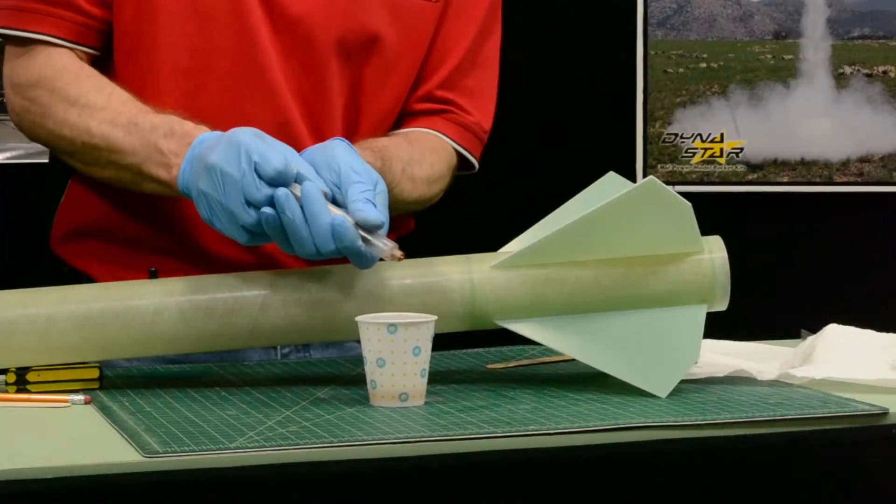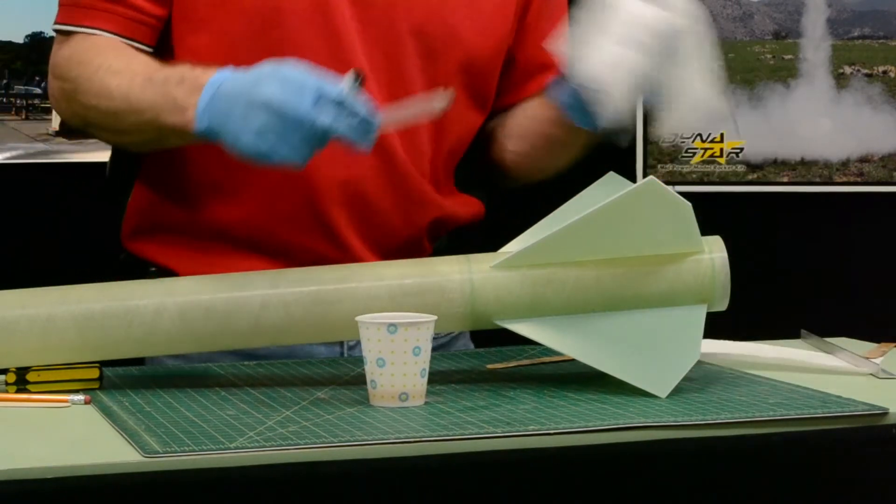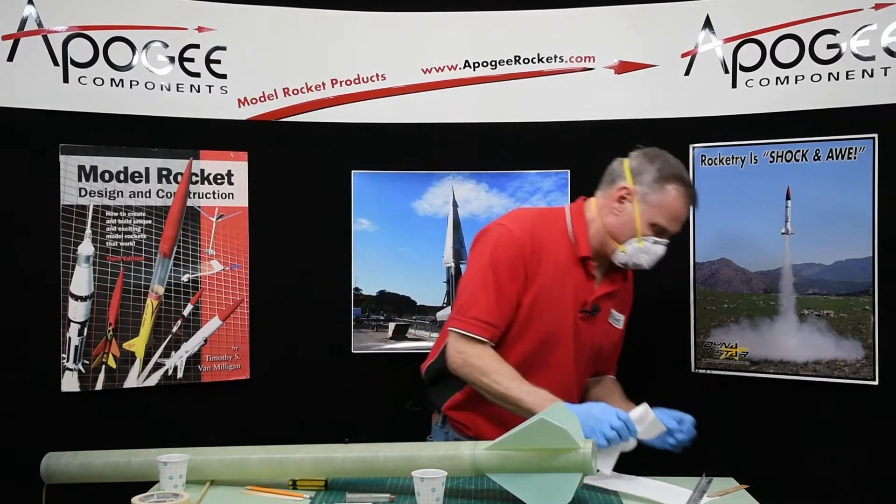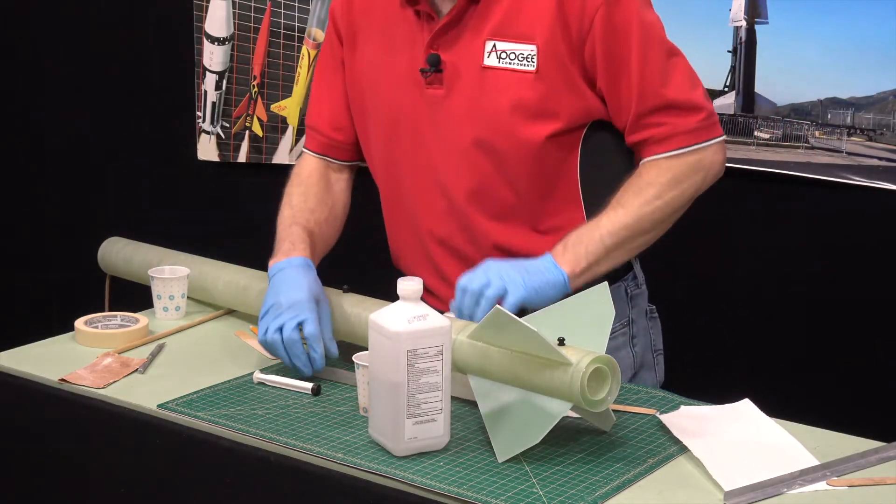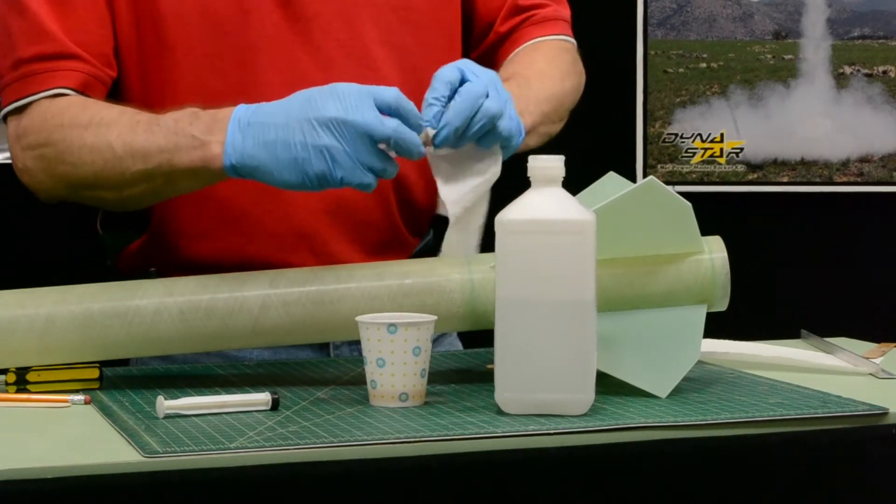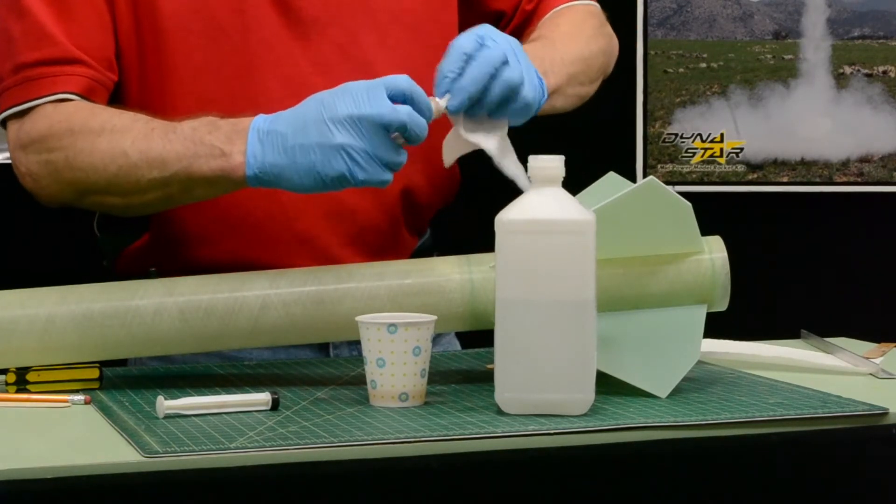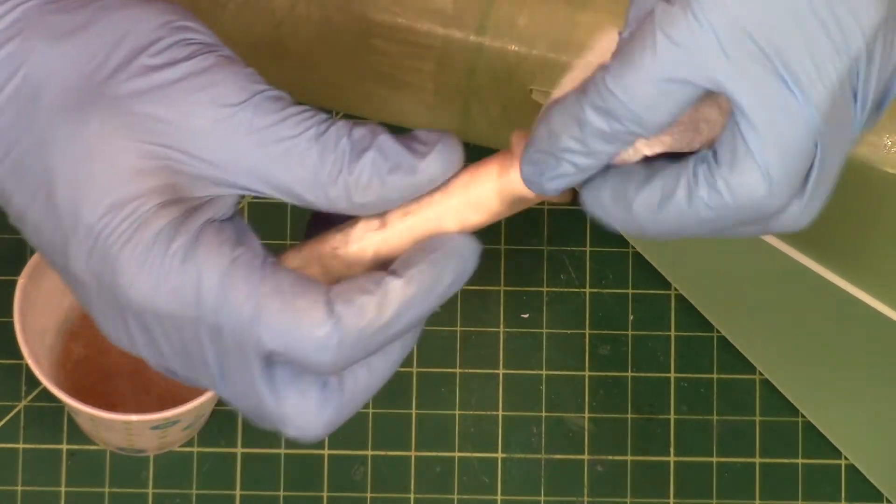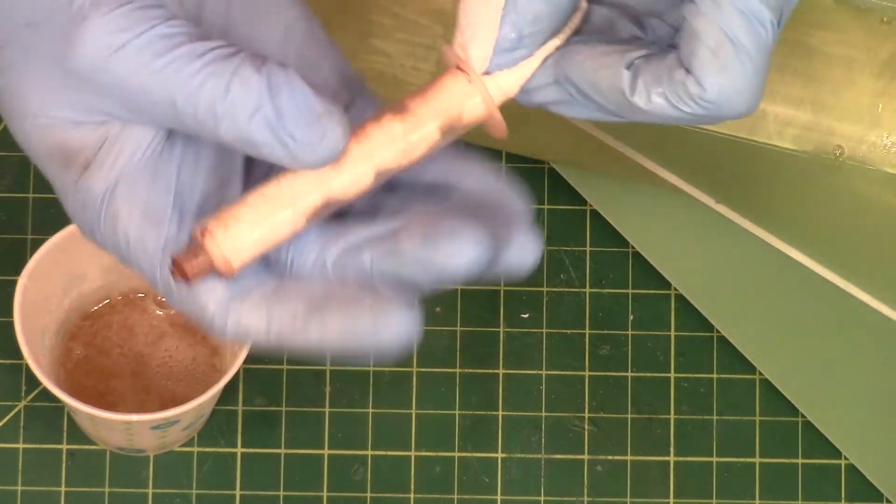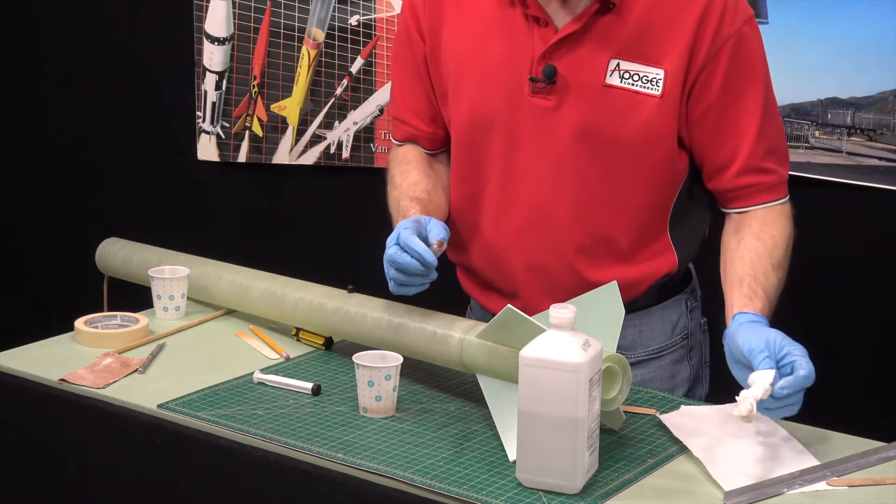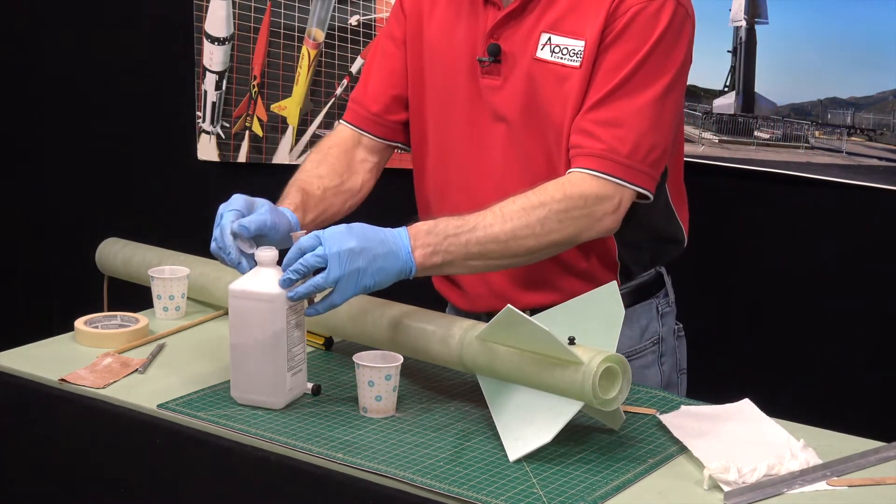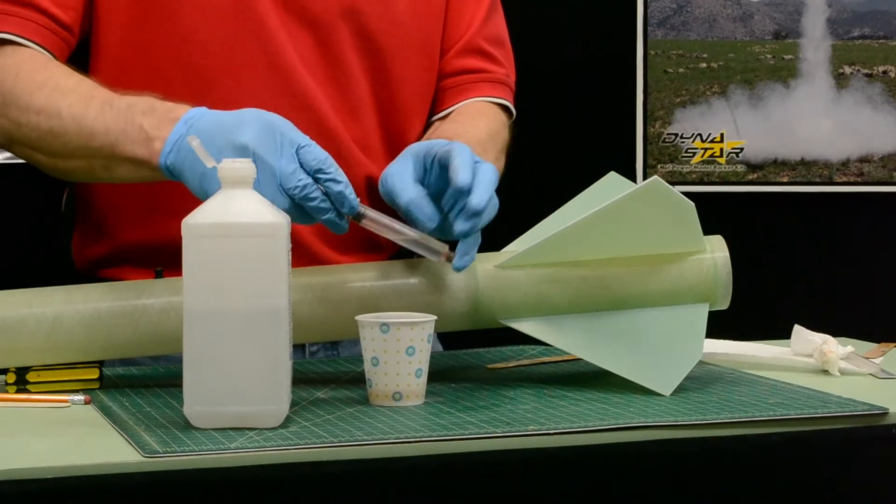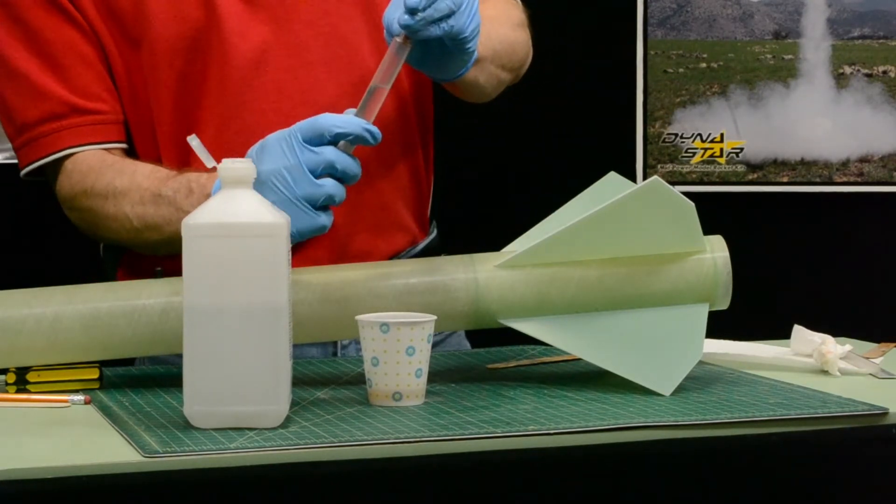Now your syringe, if you want to reuse it, you need to clean it out. And I think I would recommend some rubbing alcohol. So first we'll wipe it out as clean as we can. And then we're going to pour in some rubbing alcohol. Just like before, we've got to get the air bubble out.